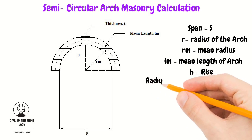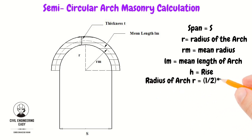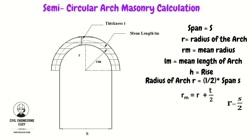Look at the figure. The radius of the arch is equal to half of the span. The mean radius Rm is equal to R plus T divided by 2, where R is the span divided by 2. So the mean radius is equal to half of the span plus the thickness of the arch, divided by 2.